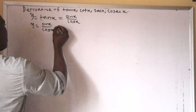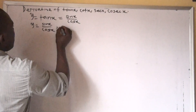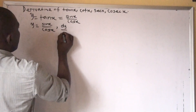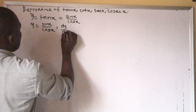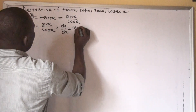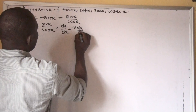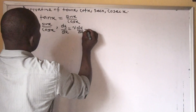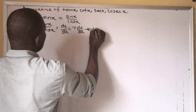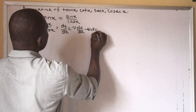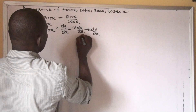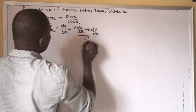We know that the quotient rule states: dy/dx is equal to v·du/dx minus u·dv/dx, all over v squared. We have established that in our previous class.